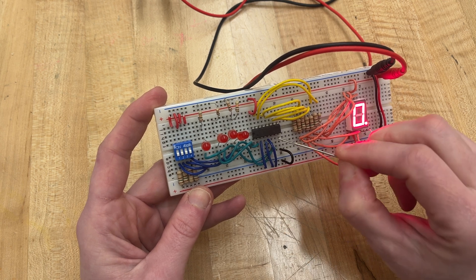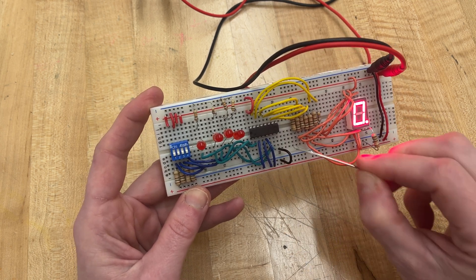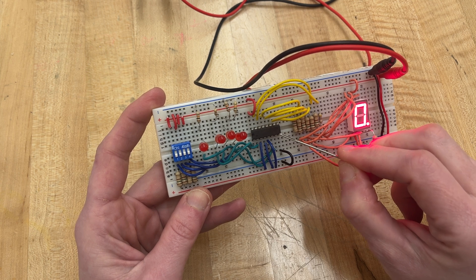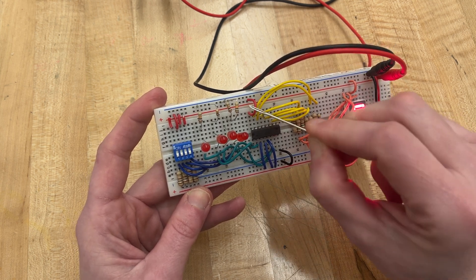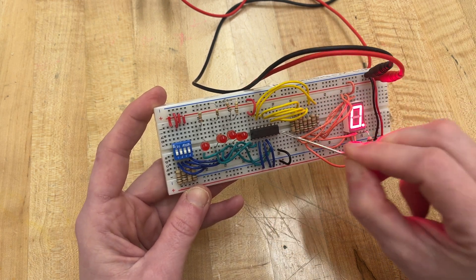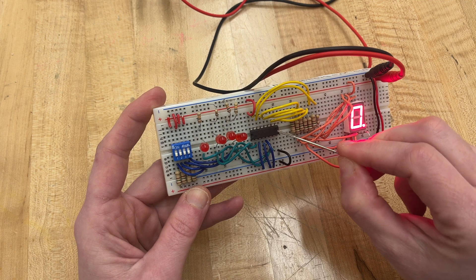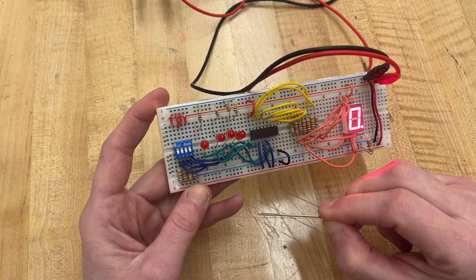So you have your A, B, C, D, and then these three just feed it to the positive. This pin over here, which is the seventh pin, needs to go to the ground, and then this one needs to go to the positive or the VCC. And then these are all of your segments A through G.